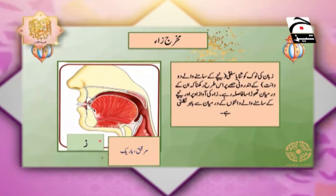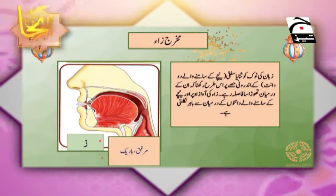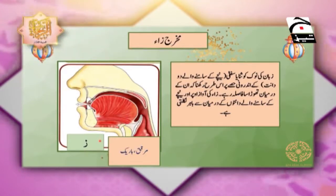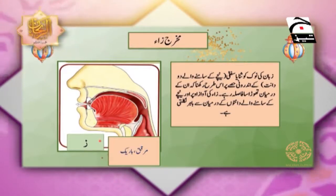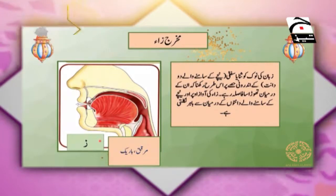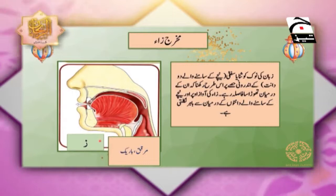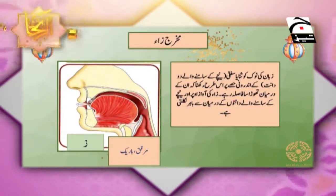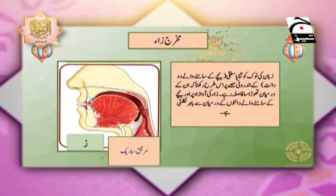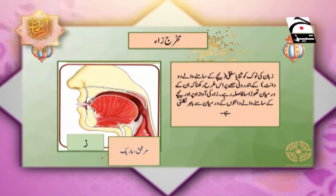اگر دیکھا جائے تو ہم ضاد کو بھی زا بولتے ہیں، واو کو بھی زا بولتے ہیں، ذال کو بھی زا ہی بولتے ہیں۔ اسی طرح سے ہم اپنی روز مرہ کی زبان میں استعمال کرتے ہیں لیکن قرآن میں بھی ایسے ہی پڑھ دیتے ہیں جو کہ غلط ہے۔ آج جو ہمارا موضوع ہے وہ زا کا مخرج ہے — یہ بھی سین اور صاد کی طرح اسی جگہ سے نکلے گا — لیکن فرق یہ ہے کہ زا light letter ہے اور صاد heavy حرف ہے۔